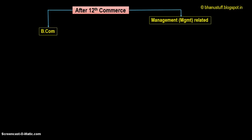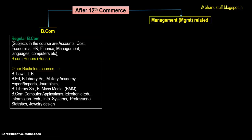BCom can be split into two parts: regular BCom, or management-related courses. Regular BCom covers subjects like accounts, cost, economics, HR, finance, management, languages, and computers. Accounts deals with tracking money coming in and going out — inputs, revenue, and profit. Cost is the money you put in. Economics deals with costing, inputs, and how humans relate to these activities.